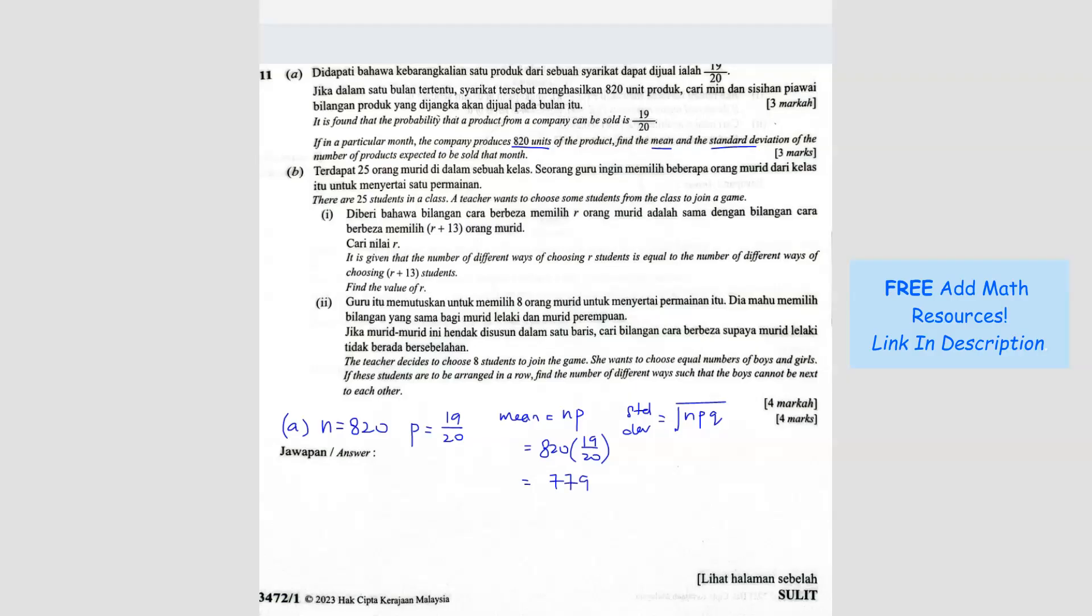And then the standard deviation will be 820 times 19 over 20. So Q will be 1 minus P. So it's 1 over 20. So you have to divide. So the answer is 6.241. So we're done with part A. Question B.